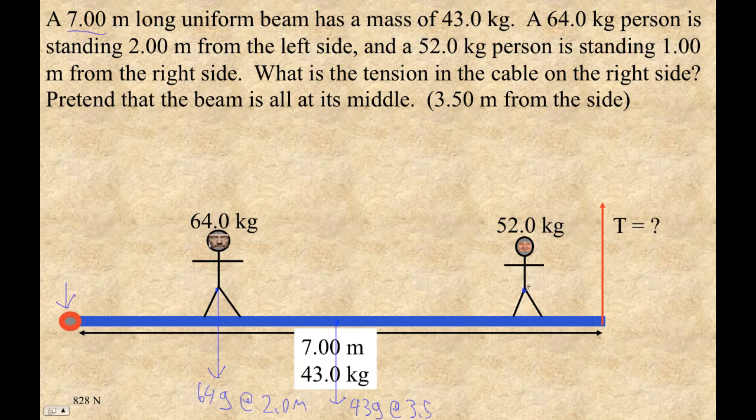And then this guy is standing a meter from the right side, but we don't care about the right side, we want the left side. So 7 minus 1 is 6 meters. So 52 G at 6 meters.